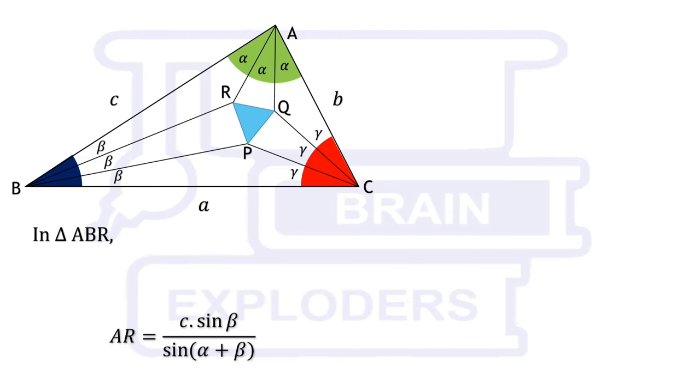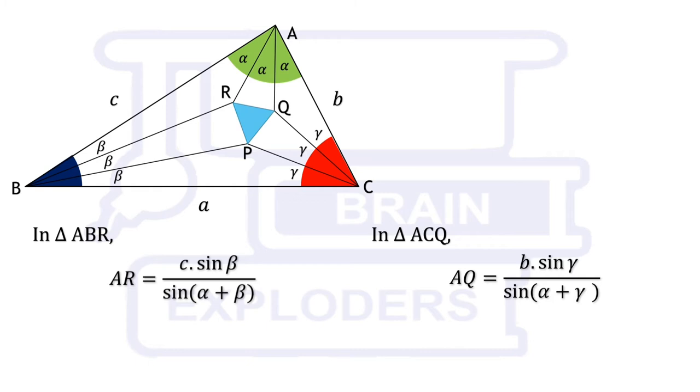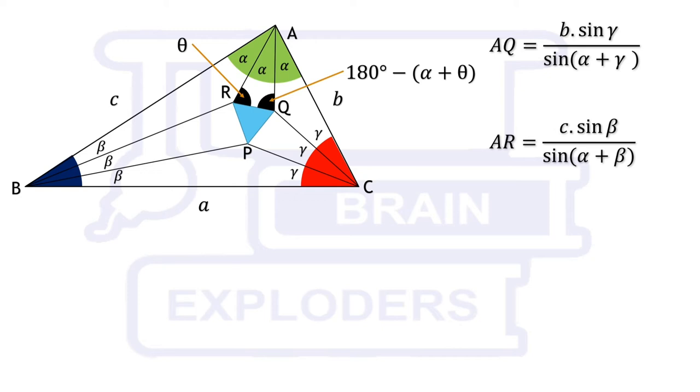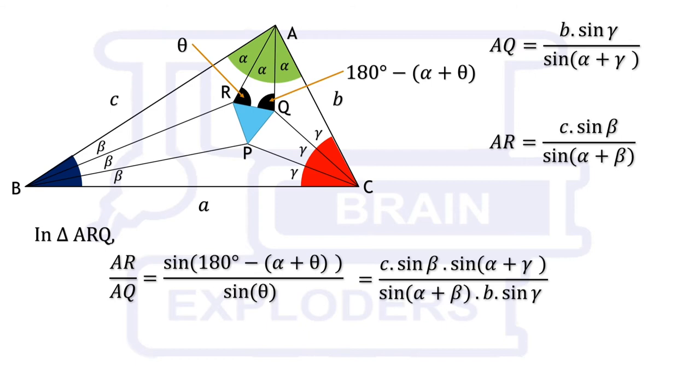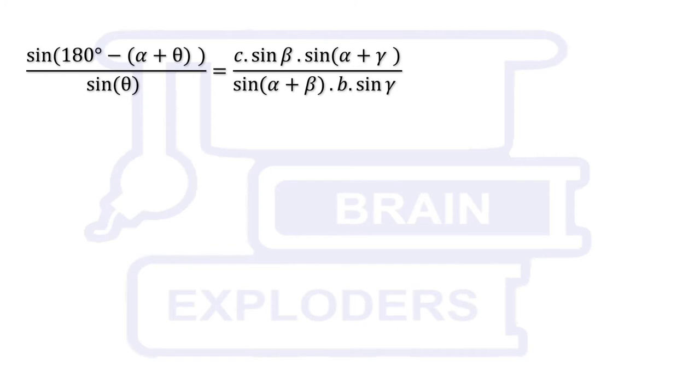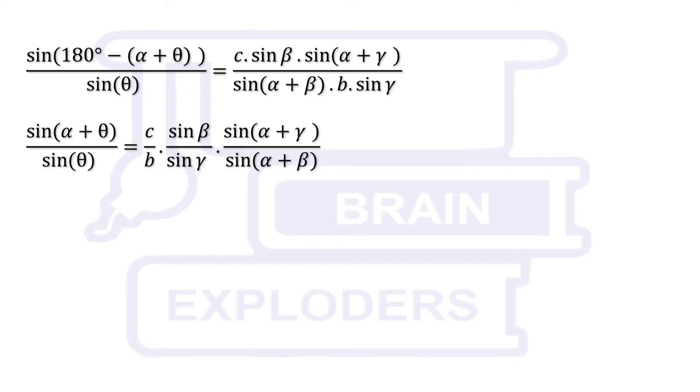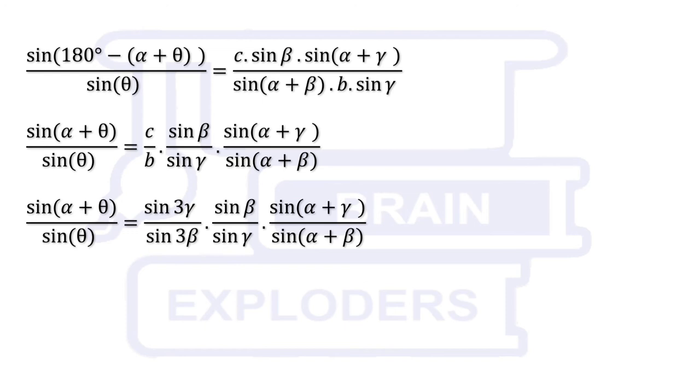Let angle ARQ is theta, angle RAQ is alpha, so angle AQR becomes 180 minus alpha plus theta. In triangle ARQ, ratio of AR and AQ must be equal to the ratio of sin of angles opposite to them. Put above values of AQ and AR in this equation. In this expression, ratio of c and b is present, which are the sides of triangle ABC. Angles opposite to them are 3 gamma and 3 beta, so we can replace it with the ratio of sin 3 gamma and sin 3 beta.